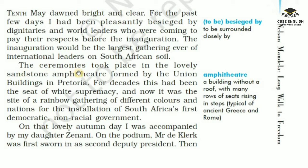The ceremonies took place in the lovely sandstone amphitheatre formed by the Union Buildings in Pretoria. For decades this had been the seat of white supremacy, and now it was the site of a rainbow gathering of different colours and nations for the installation of South Africa's first democratic, non-racial government. Amphitheatre means a building without a roof with many rows of seats rising in steps, typical of ancient Greece and Rome.